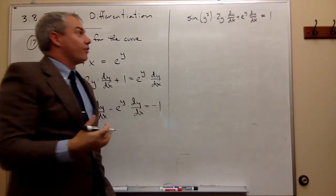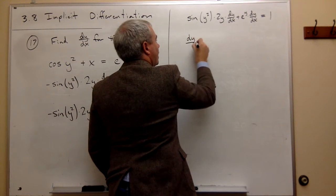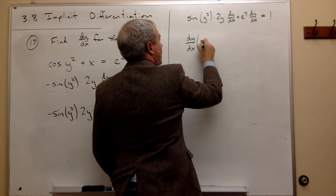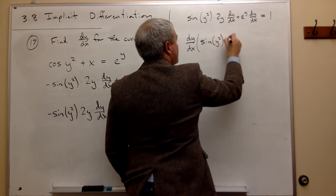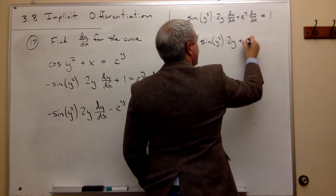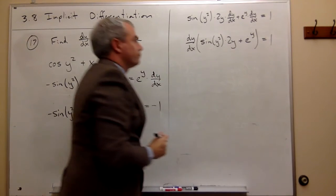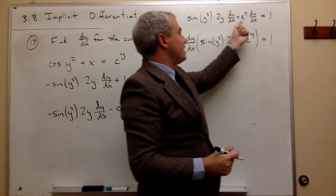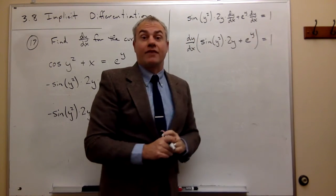If I do, I get dy/dx times (sin(y²) times 2y + e^y) = 1. So all I did in this step is factor dy/dx out of all the terms on the left hand side.